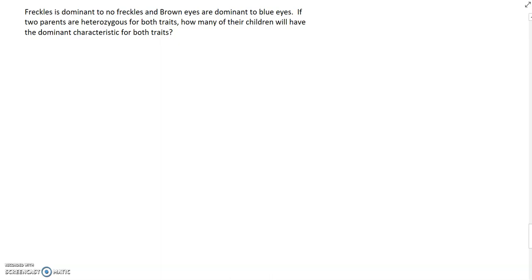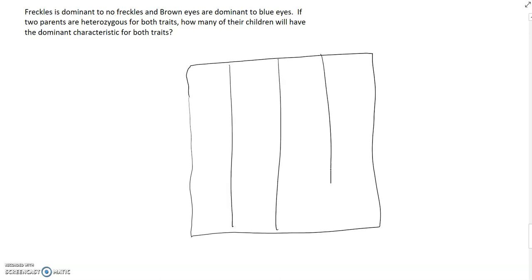So we're going to, this is a two trait problem, so that means our Punnett square is going to get quite a bit bigger. And we're going to have a 16 box Punnett square. So for one trait we only need four, but for two traits we need actually 16 boxes.